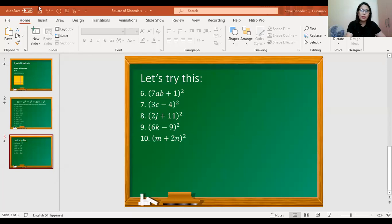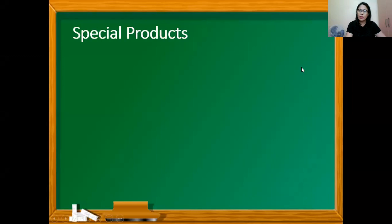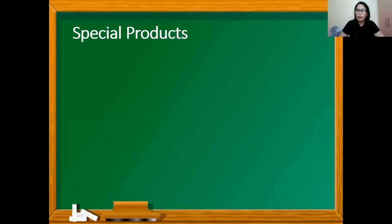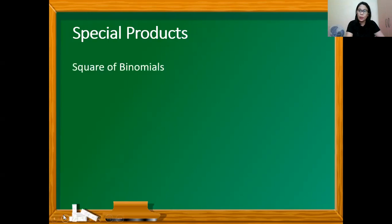We'll be working on special products. When we say special products, this pertains to multiplication of polynomials. Why is it called special? Because there are special patterns that I'm going to introduce as we work on special products, and these special patterns are not applicable to all multiplication of polynomials. The first special product I'm going to introduce is square binomials.